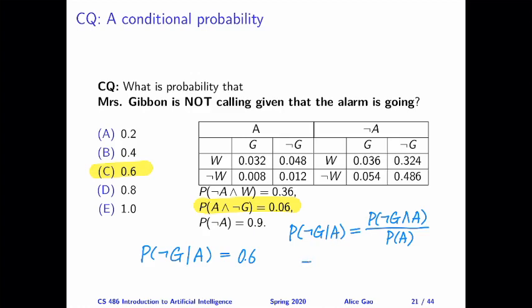So let's plug in. This is equal to 0.06 divided by 1 minus 0.1. So 0.06 divided by 0.1, which is 0.6. So option C.